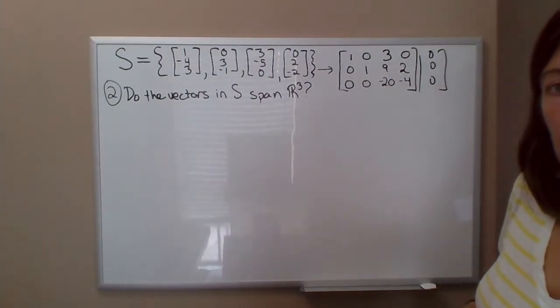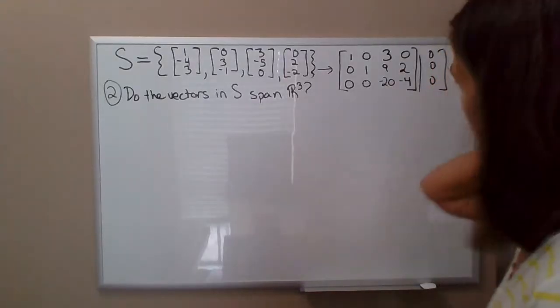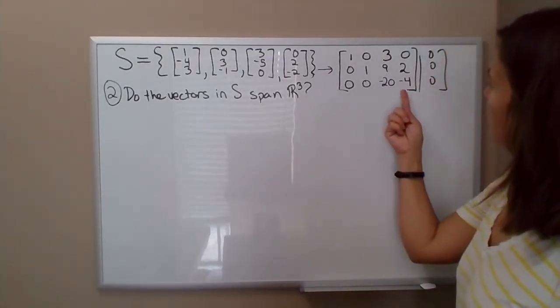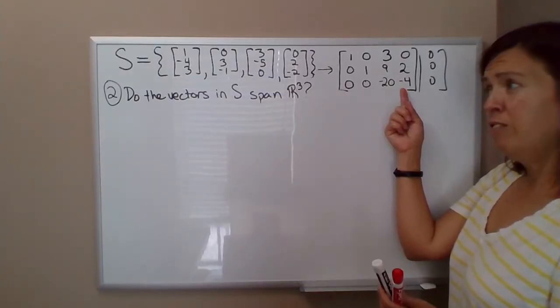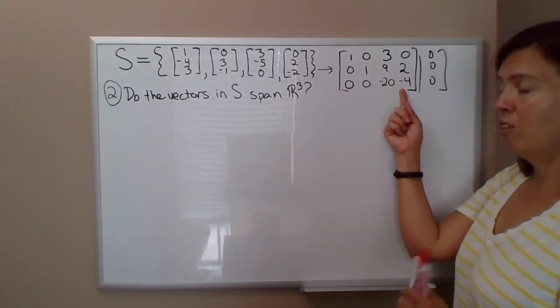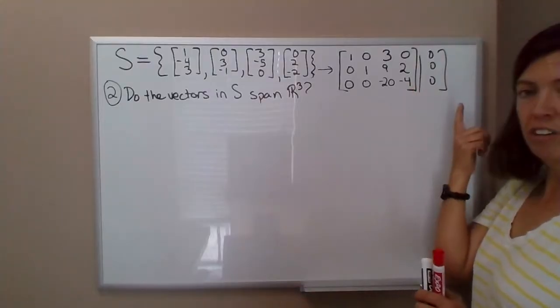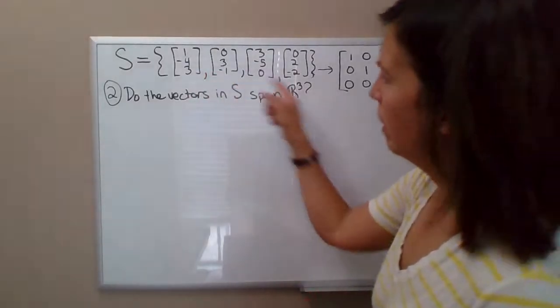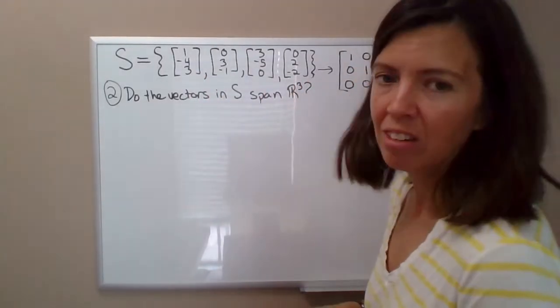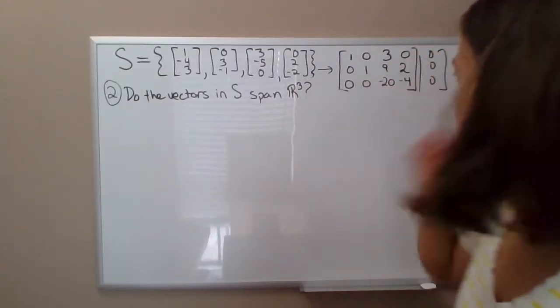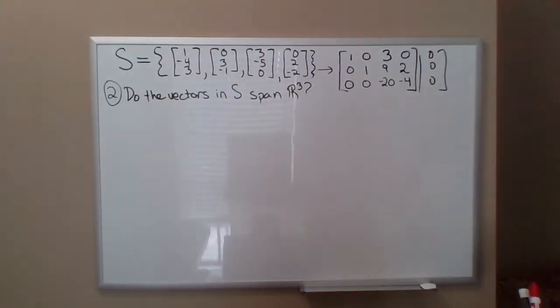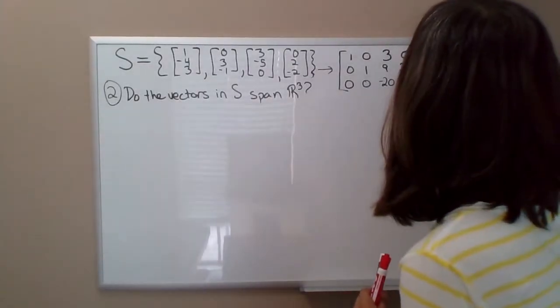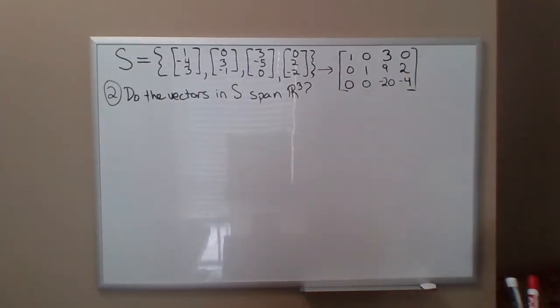We were trying to determine whether that has a non-trivial solution. Since there is a non-pivot column here in column four, C4 is a free variable, which means there are non-trivial solutions, so it's linearly dependent. And then I pointed out, you've got four vectors in R³. That's automatically linearly dependent. So we know this set is linearly dependent. Now asking another question: do the vectors span R³?